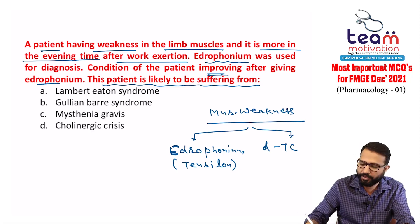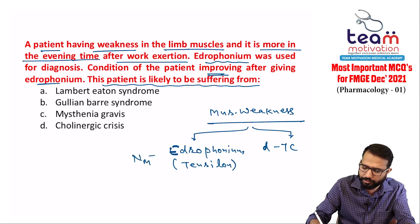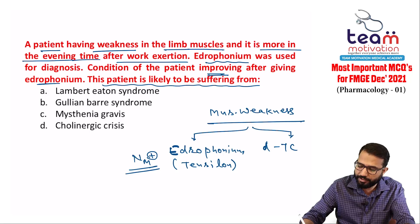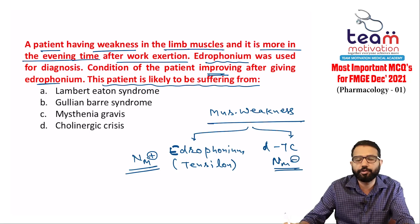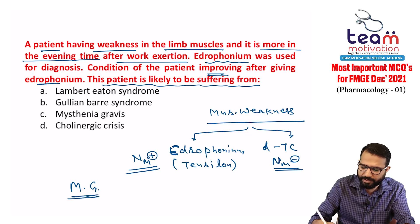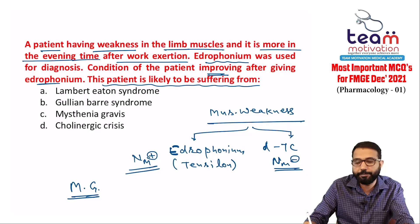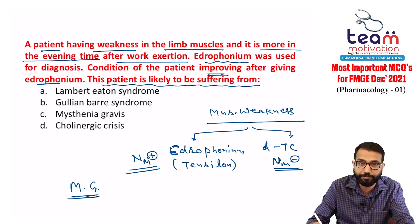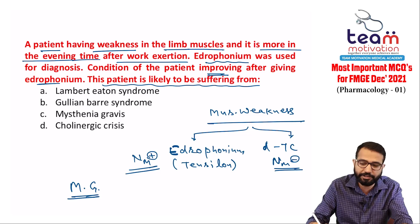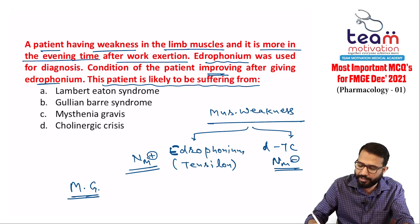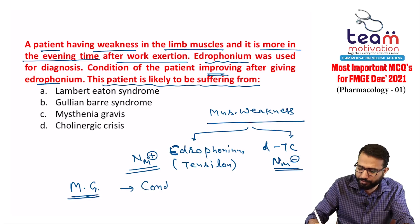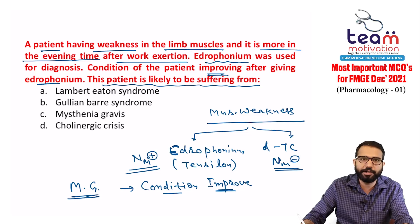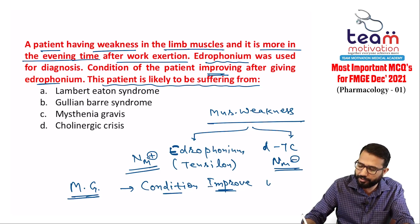Edrophonium acts on nicotinic NM receptors as a stimulant — it is a neostigmine group drug. D-tubocurarine is an NM blocker. In myasthenia gravis, there are antibodies against NM receptors — causing muscle weakness due to NM receptor destruction (autoimmune disease). NM receptor functioning is decreased.